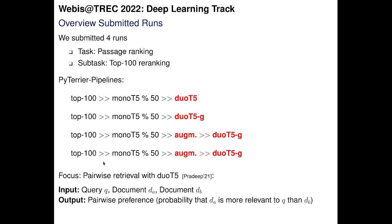The talk will focus quite a lot on Duo T5, so let me explain the basics. Duo T5 has as input a query Q, a document DA, and a document DB — a triple consisting of query, document, and document. It outputs the pairwise preference of those two documents: the probability that document DA is more relevant to the query than document DB.